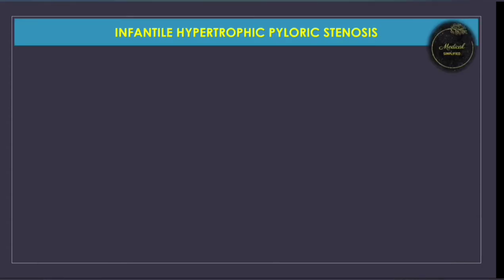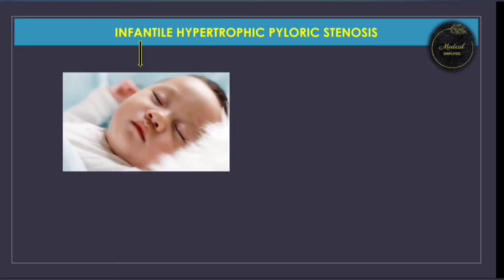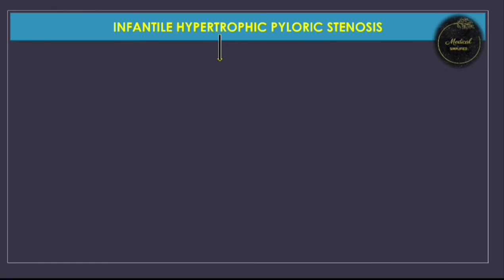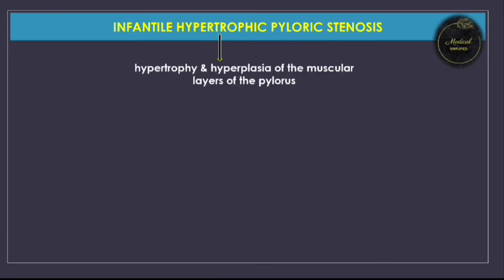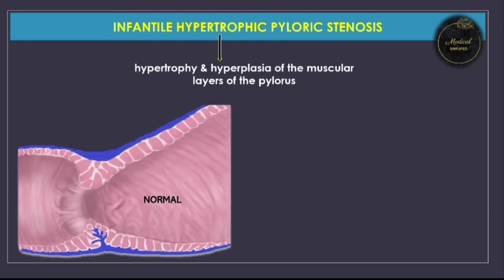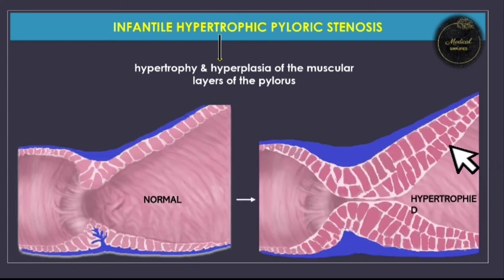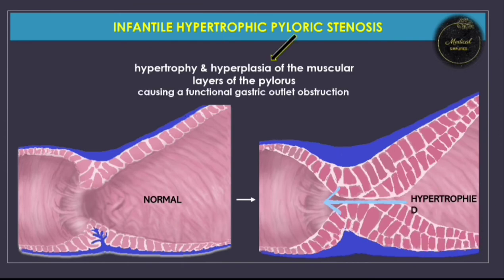Let's start with our main topic: infantile hypertrophic pyloric stenosis. The terms themselves describe what it is. 'Infantile' implies it is a disease of infancy, as the average age when symptoms begin is three weeks, though it can start anywhere between one week and up to five months. 'Hypertrophic' refers to the hypertrophy and hyperplasia of the pyloric muscles, which narrow the passage out of the pylorus, leading to functional gastric outlet obstruction.